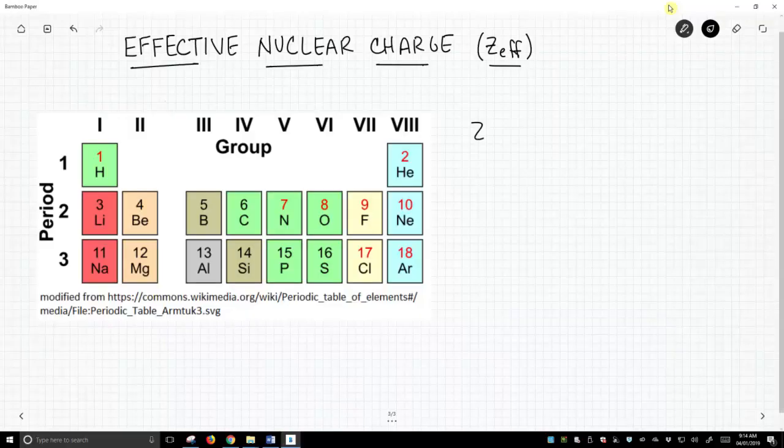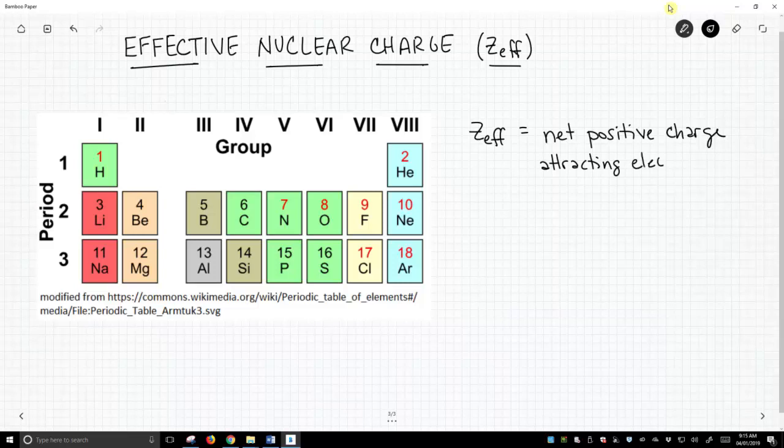Effective nuclear charge – I'm going to define this, and that's capital Z and then subscript EFF – this is the net positive charge attracting electrons, and it's assumed that that's going to be within an atom, and it's attracting these electrons to the nucleus.